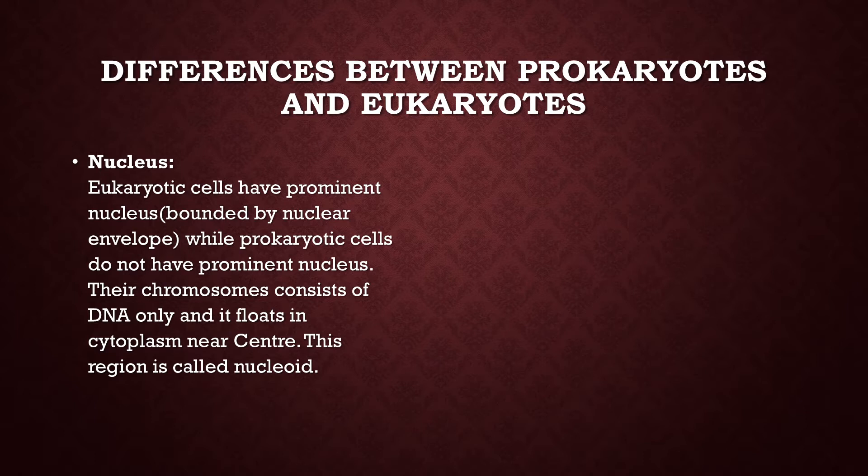Prokaryotes do not have a prominent nucleus. The question arises: if prokaryotic cells lack a nucleus, how are they stable? The answer is that their chromosomes consist of DNA only, and this DNA floats in the cytoplasm near the center. This region is called the nucleoid.